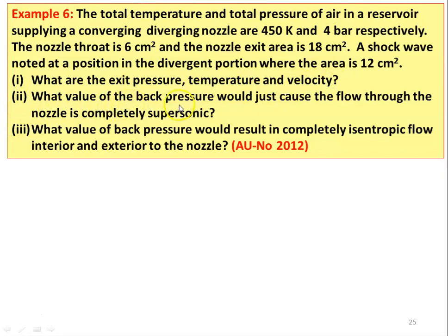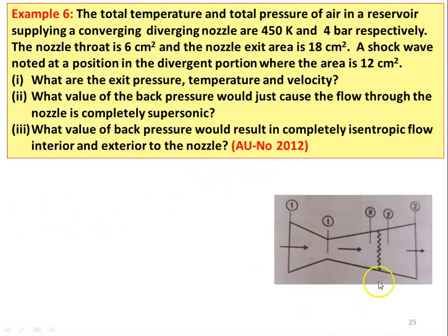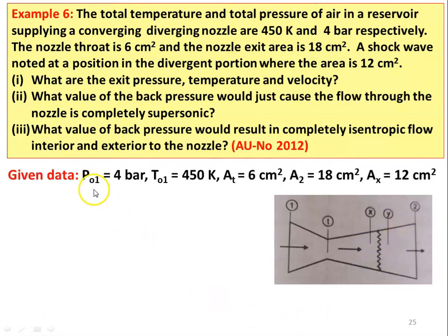Sub-question 2: What value of back pressure would just cause the flow through the nozzle to be completely supersonic? What value of back pressure would result in completely isentropic flow interior and exterior to the nozzle? This is the converging-diverging nozzle with inlet condition 1, T for throat section, and 2 as the outlet. Here x denotes properties before the shock and y denotes properties after the shock. The shock occurs at Ax = Ay = 12 cm².